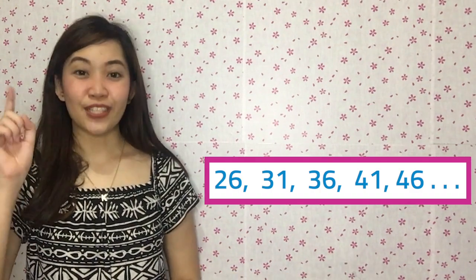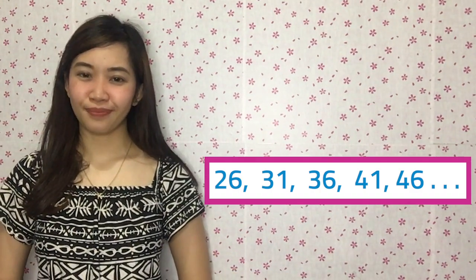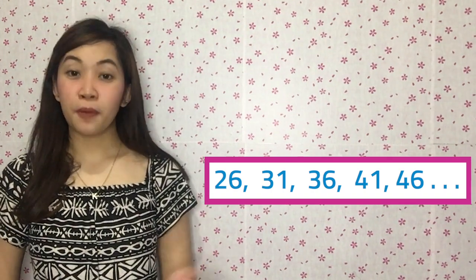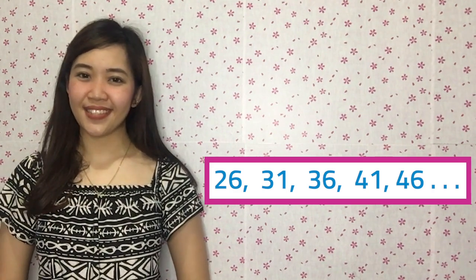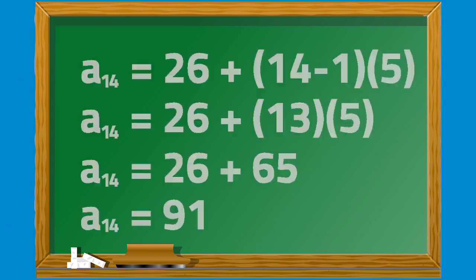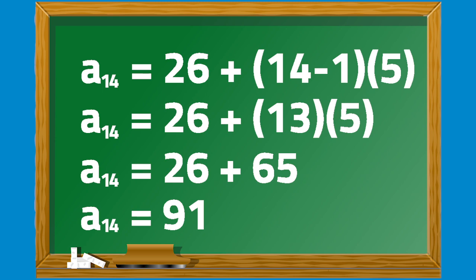Let's try more examples finding the nth term in arithmetic sequences. What is the 14th term in this sequence? The common difference is 5 and the first term a sub 1 is 26. A sub 14 equals 26 plus 14 minus 1 times 5, equals 26 plus 13 times 5, equals 26 plus 65, equals 91.